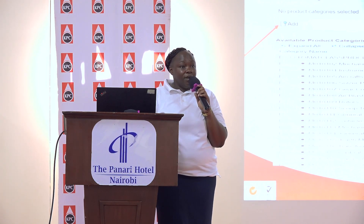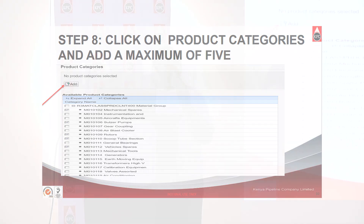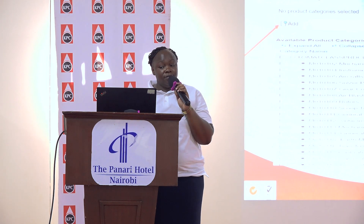Then we have the product category. These are the services that you want to offer to KPC, and you are allowed to select up to a maximum of five. It doesn't matter from which category, whether it is under engineering, safety, general supplies, or corporate communication — you can cut across all the fields, but you are allowed to select up to a maximum of five. At the end of the presentation, I will show you how to expand on the product category tab so that you are able to select the categories.